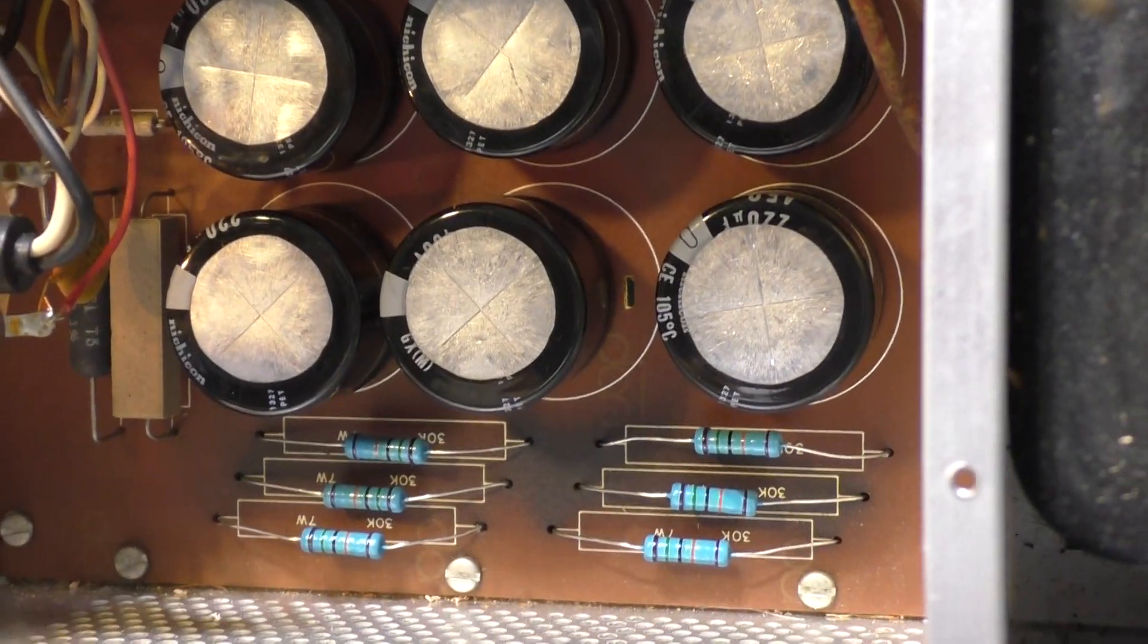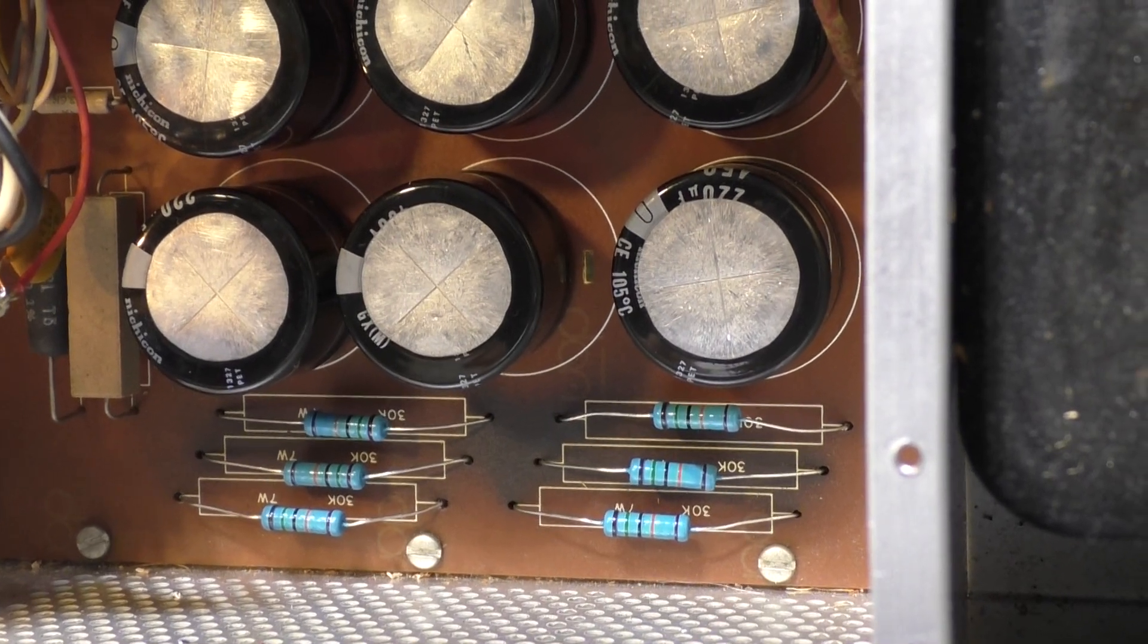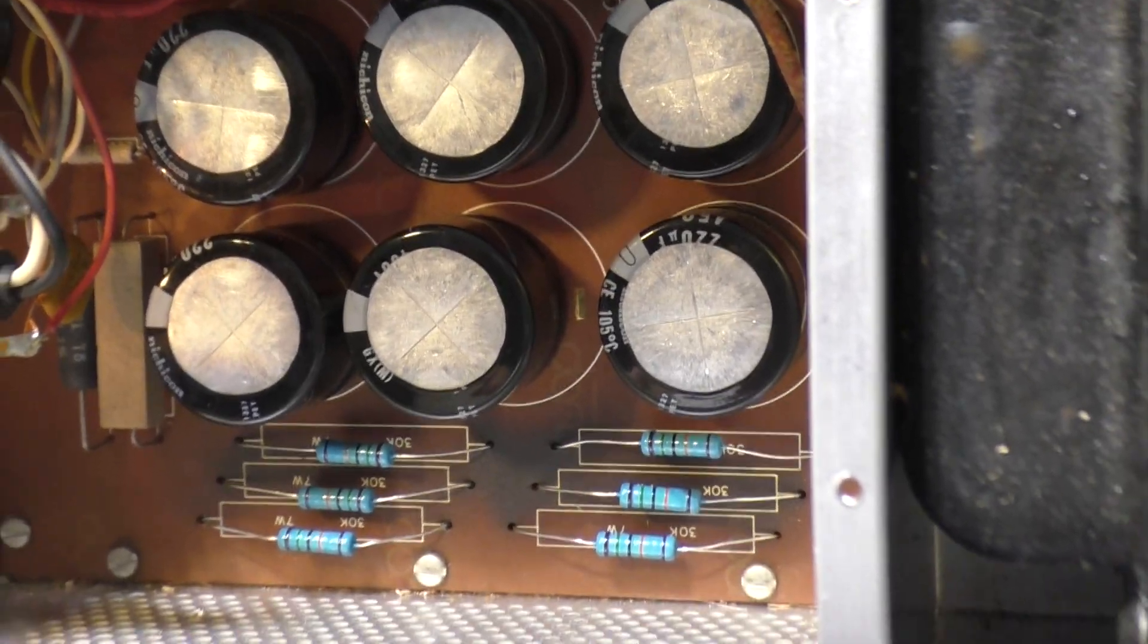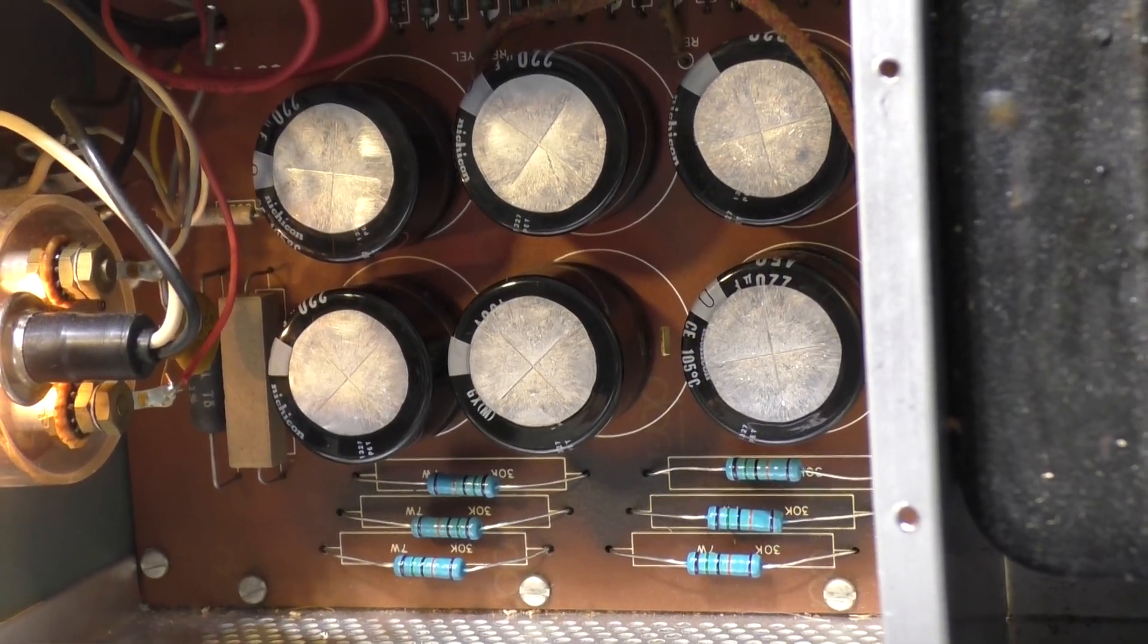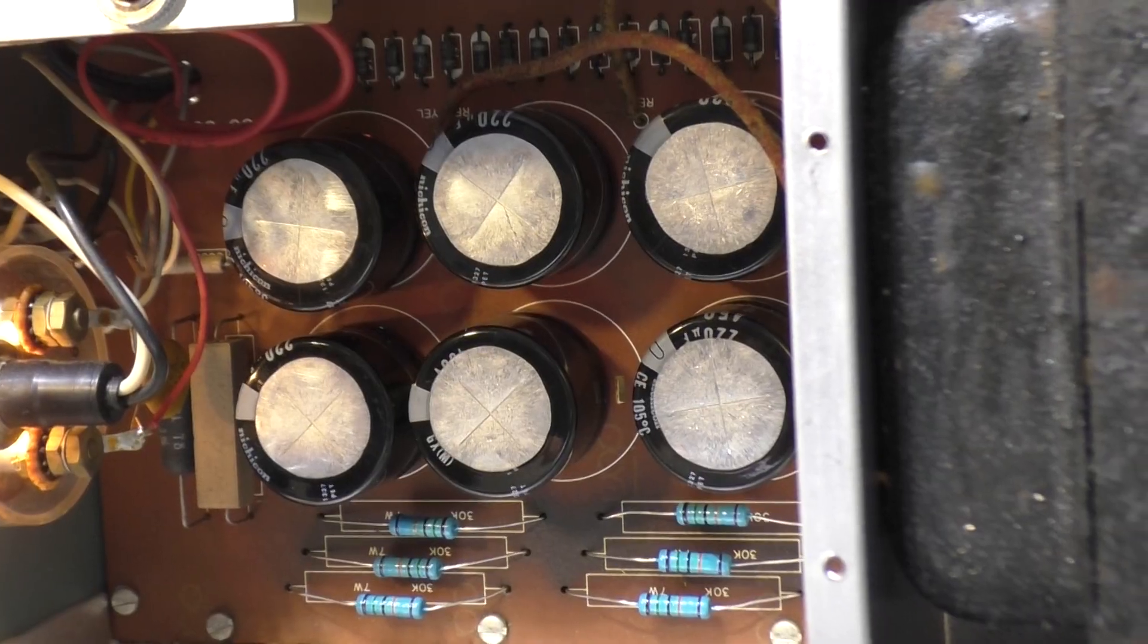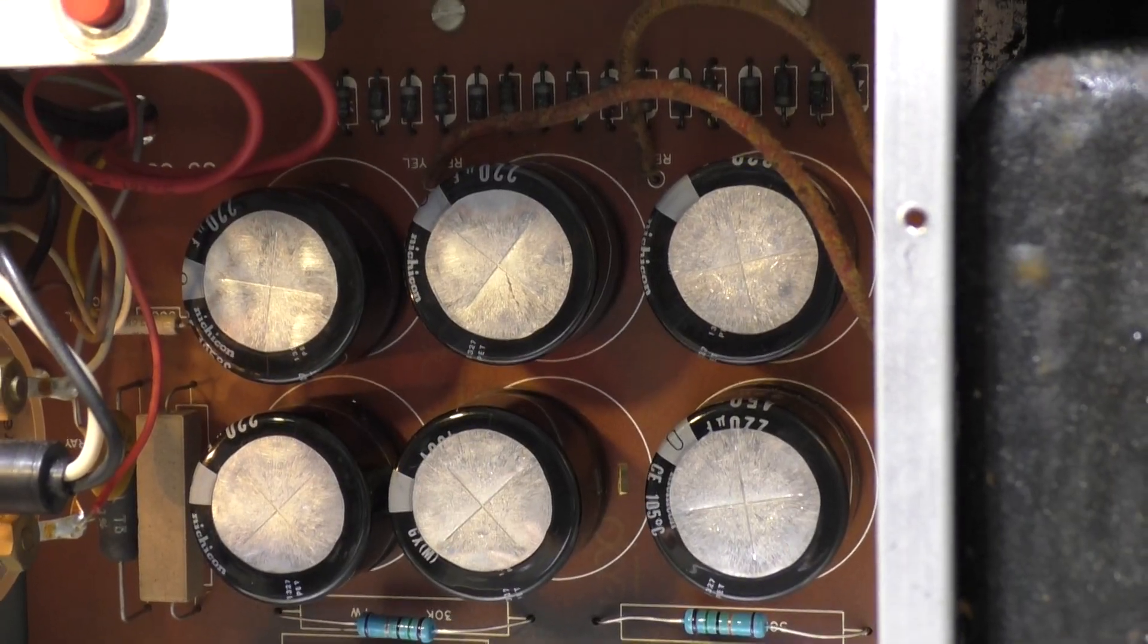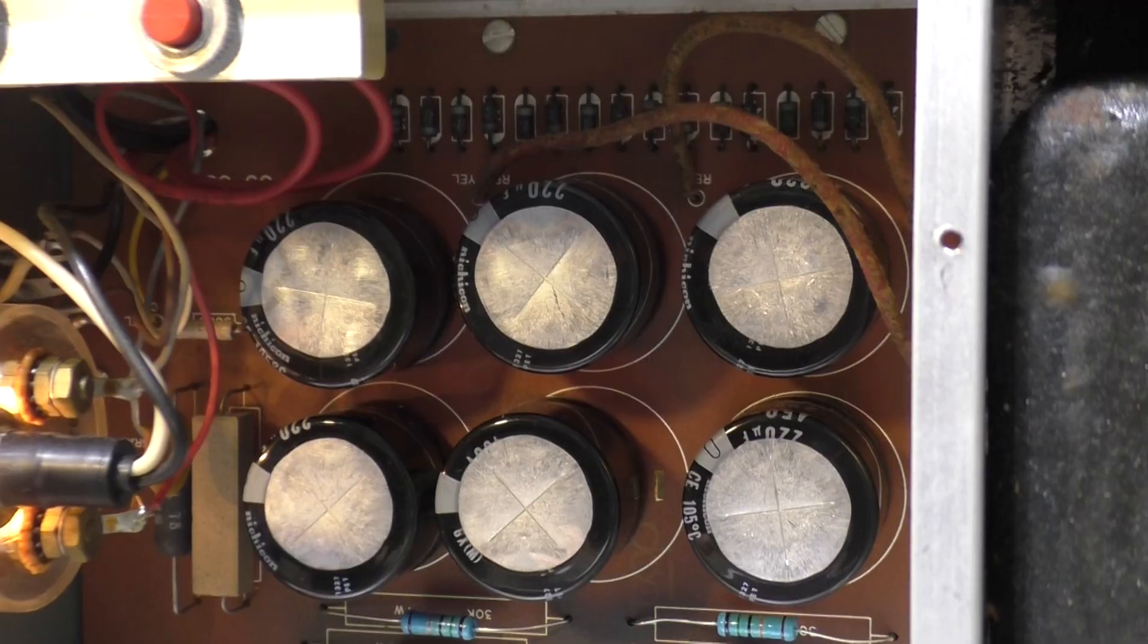It's been recapped as you can see. And also the blue resistors under the caps are the bleeder equalizer resistors. It had a big old 7 watt, I think 30k if I remember right in it, which was the original design.